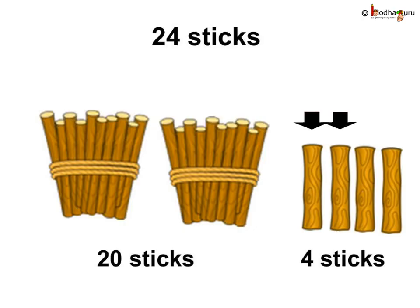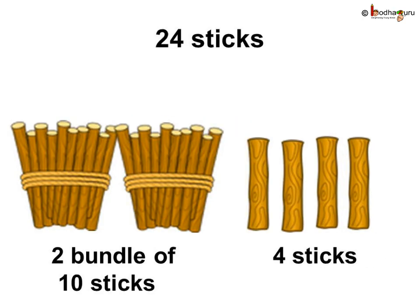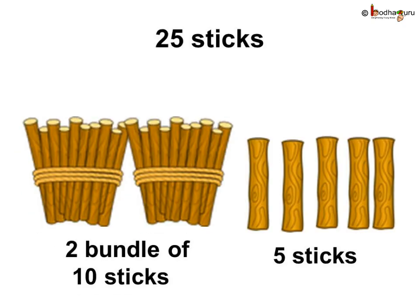Let us count 20 sticks and four sticks. It is 20, 21, 22, 23, 24 sticks. It is 24. Thus, 24 sticks means two bundles of 10 sticks — that is 20 and 4.